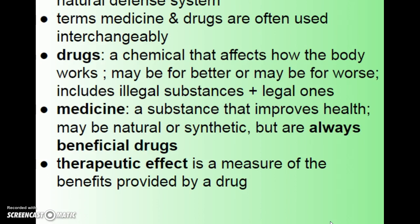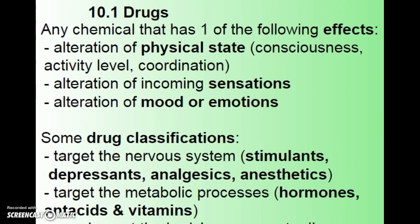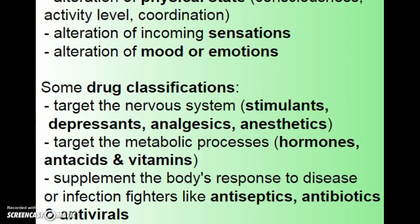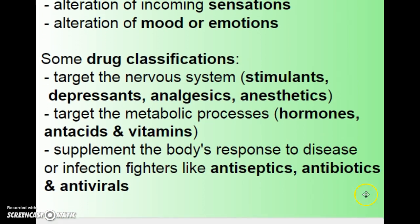The therapeutic effect is the measure of the benefits provided by a drug — researchers must demonstrate a measurable therapeutic effect before the FDA allows it on the market. Drugs can alter physical state, consciousness, activity level, coordination, incoming sensations, and mood or emotions. Drugs are classified based on which of these areas they affect. Some target the nervous system — stimulants, depressants, analgesics (painkillers), and anesthetics. Others affect metabolic processes — hormones, antacids, and vitamins. And others supplement the body's response to disease, such as antiseptics, antibiotics, and antivirals.